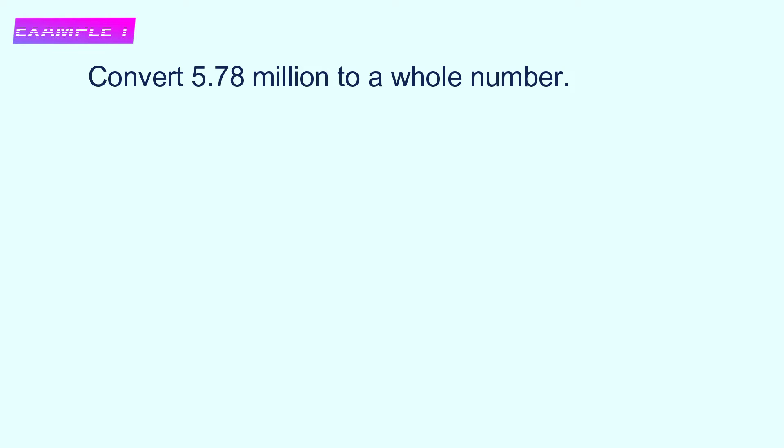Number one: convert 5.78 million to a whole number. To convert to a whole number, we need to multiply by 1 million. So, 5.78 million multiply by 1 million.